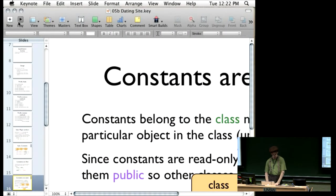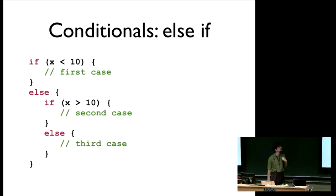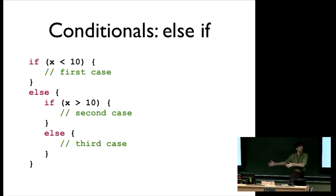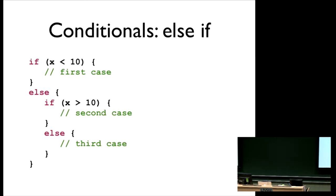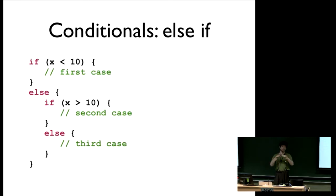Sometimes we want to have more than two branches. There's a simple three-branch case: if x is less than 10, we do the first thing; if it's greater than 10, we do the second thing; if it's equal to 10, we do the third thing. As we get more and more cases, if we keep doing else and then in braces another if, then else and another if, it starts building out in this direction and getting hopelessly nested. It makes our code rather hard to read because there are lots of braces inside lots of braces inside lots of braces.